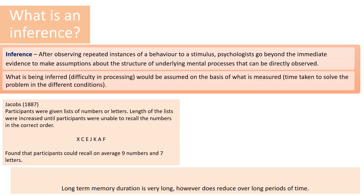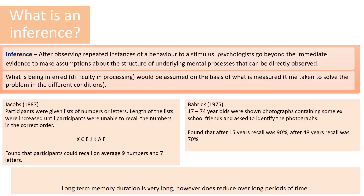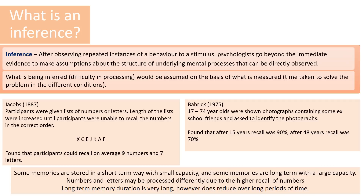The second piece of research is by Barrick. Barrick looked at participants between the ages of 17 and 74, who were shown photographs of ex-school friends and asked to identify them. He found that after about 15 years recall was about 90%, but after 48 years recall was 70%. Based on these two studies, we can infer that some memories are stored in a short-term way with a small capacity, while some are long-term with a large capacity. We might also infer that numbers and letters are processed differently, and that long-term memory duration is very long but information is still lost.